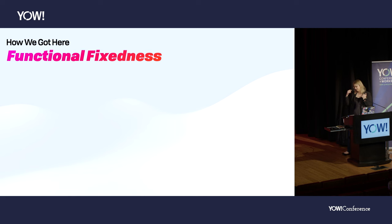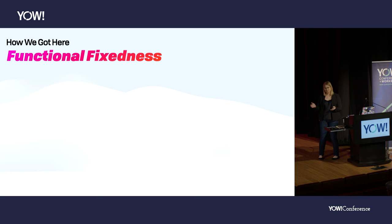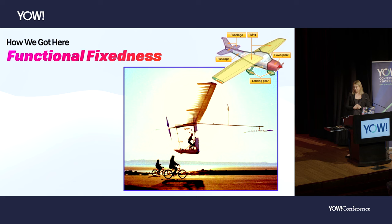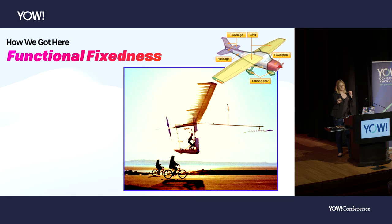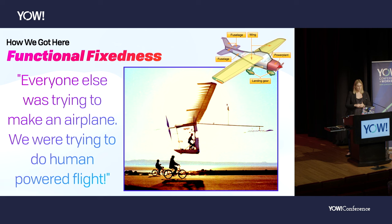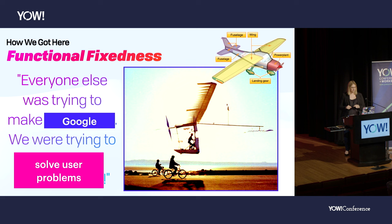The tools we have affect the way we think about problems. There was a competition in the 60s, eventually solved in the 70s, for human-powered flight — no engine other than a human pedaling. It took 10 years. When they asked McCready, the leader of the winning team, why they solved it when everyone else had spent 10 years on it, he said: everyone was trying to make an airplane; we were trying to do human-powered flight. Right now, everyone's trying to make Google Google when we should be trying to build apps, or maybe even better, solve user problems.